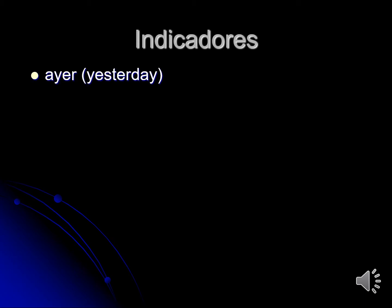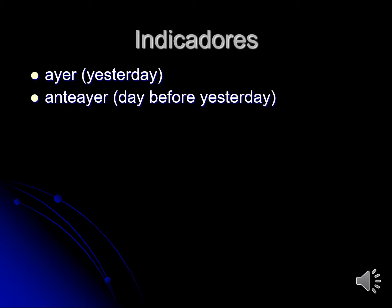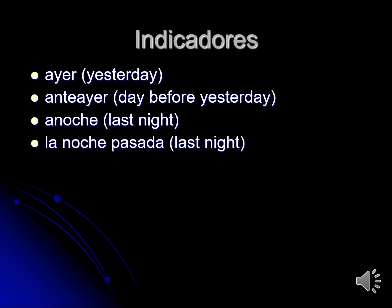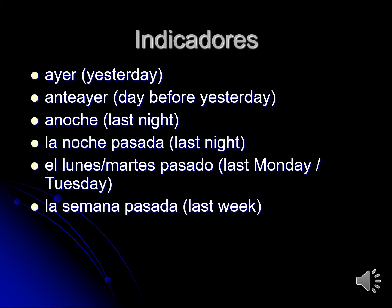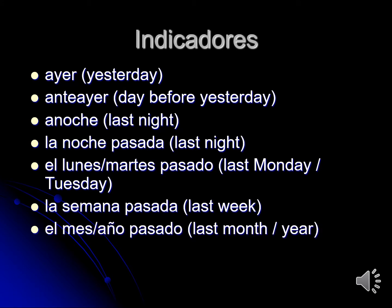Indicadores. These are some of the indicator words that let you know that you want to use the preterite tense. Ayer, which is yesterday. Anteayer, which is the day before yesterday. Anoche, last night. La noche pasada, which is also last night. El lunes pasado, el martes pasado — last Monday, last Tuesday, etc. La semana pasada, last week. El mes pasado, o el año pasado, last month, last year. I think you see where this is going.